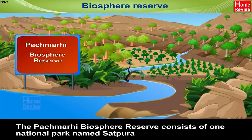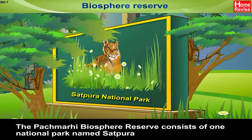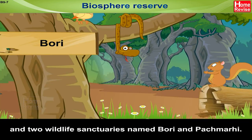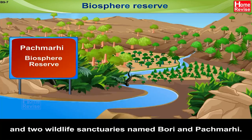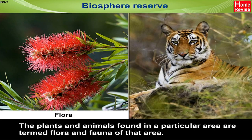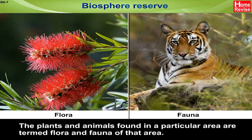The Panchmarhi Biosphere Reserve consists of one national park named Satpura and two wildlife sanctuaries named Bori and Panchmarhi. The plants and animals found in a particular area are termed the flora and fauna of that area.